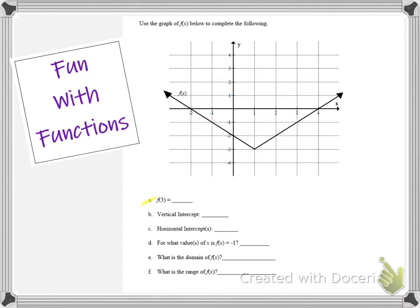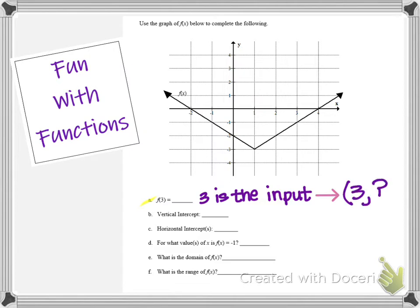If we had an equation for f of x, we would take the number 3 and substitute it in for the x value. Instead of an equation, we have a visual representation of f of x in the graph. So we are still going to substitute 3 in for the x value, except we have to get our y value by looking on the graph. So we know that 3 is the input value, which means we need to look in the graph for an ordered pair that looks like 3 comma something.